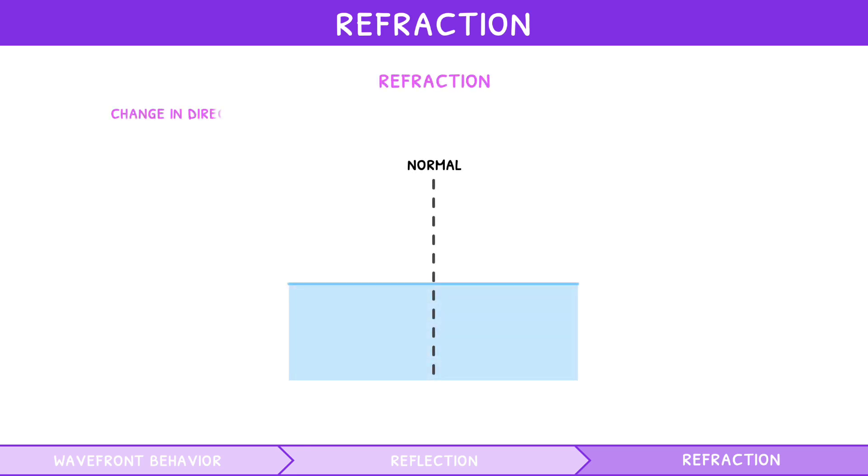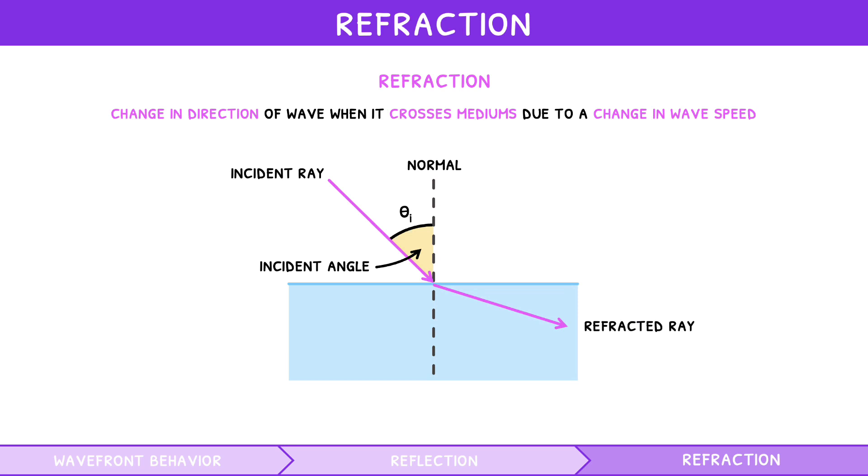Refraction is the change in direction of a wave when it crosses from one medium, n1, to another, n2, due to a change in wave speed. Just like reflection, the rays involved in refraction can be broken down into the incident ray, coming in at an incident angle theta i to the normal, and the refracted ray, transmitted at a refracted angle theta r to the normal. Unlike reflection, these two angles are never the same.